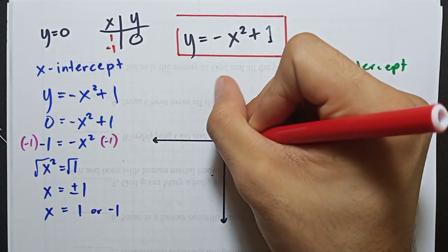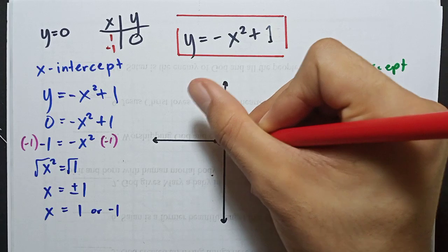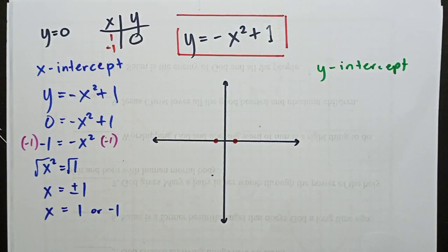Let's plot them. Maybe this is it? Negative 1 and 1.